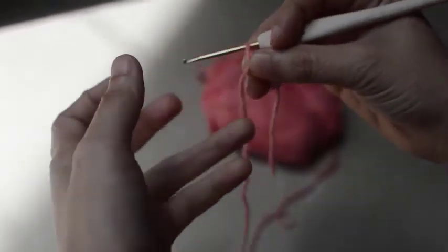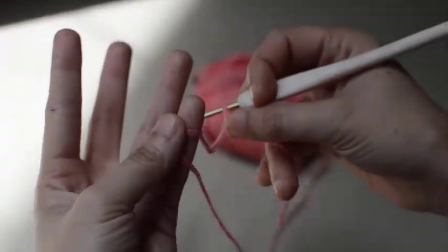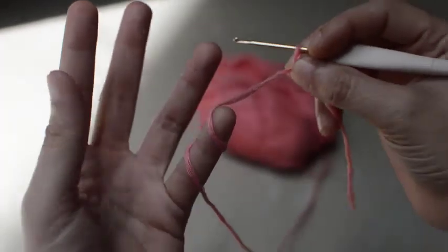So first, we wrap the yarn around our pinky. So this is the ball of the yarn, holding the yarn in my right hand with the hook.